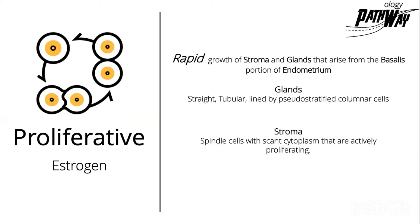The proliferative phase is under the effect of estrogen and is characterized by rapid growth of stroma and glands that arise from the basalis portion of the endometrium. When examining the endometrium, we look at the glands and the stroma. In the proliferative phase, the glands are straight and tubular, lined by pseudostratified or columnar cells. The stroma contains spindle cells with scant cytoplasm that are actively proliferating, and we will find mitotic figures.